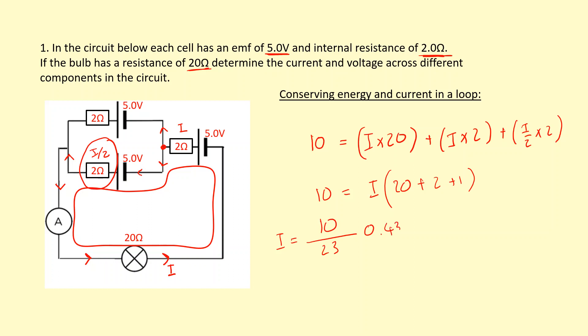That's the current through here, so I can figure out the voltage by doing 0.435 times 20, which gives 8.7 volts. For the current here, I do 2 times 0.435, giving 0.87 volts lost here. The current through this one is i over 2, so 0.435 divided by 2 times 2, which is 0.435 volts across that as well.